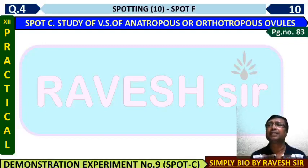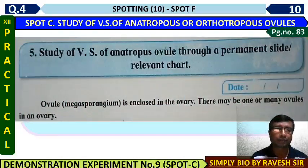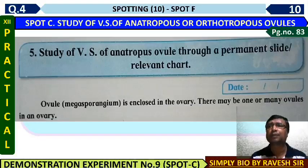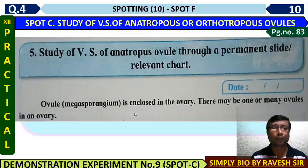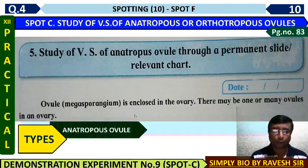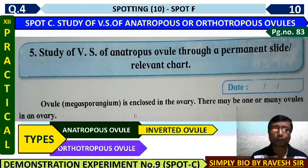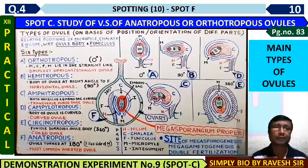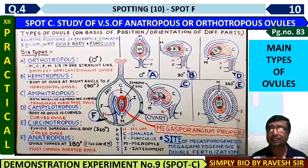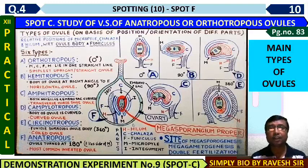On page number 83, experiment number five is written — study of VS of anatropos ovule using a permanent slide or chart. The ovule is basically a megasporangium enclosed within integuments, called an integumented megasporangium. There are two types of ovules to study: anatropos (inverted) and orthotropos (straight). There are six main types in total, of which anatropos is the most common. I have made a video on the types of ovule.